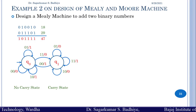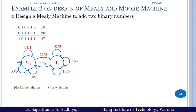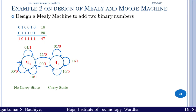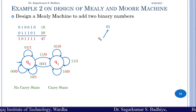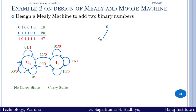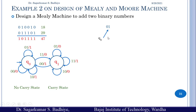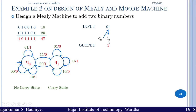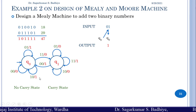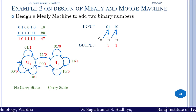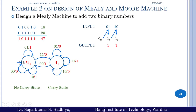Now let us trace the addition of 18 and 29 through the machine, with input as pairs of bits. We start in q0. The first input is 01 — in q0 with input 01, we stay in q0 and produce output 1. The next input is 10 — in q0 with input 10, we produce output 1 and stay in q0. The next input is 01 — again we stay in q0 and produce output 1.